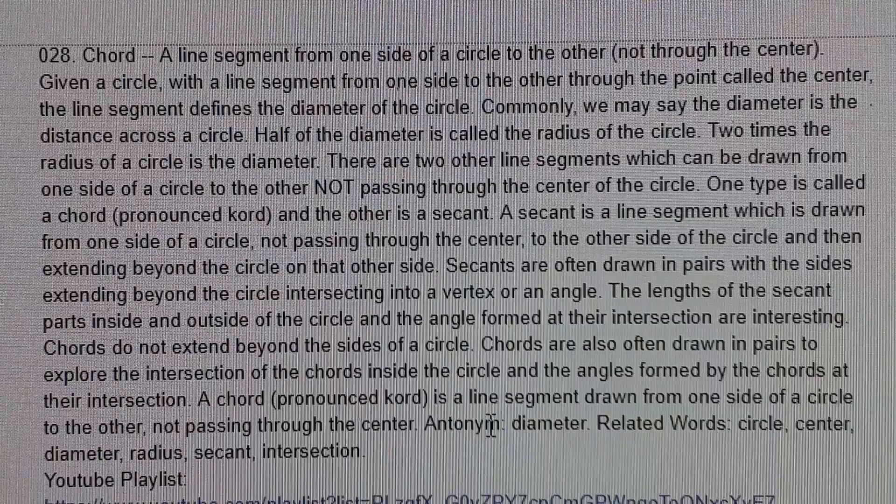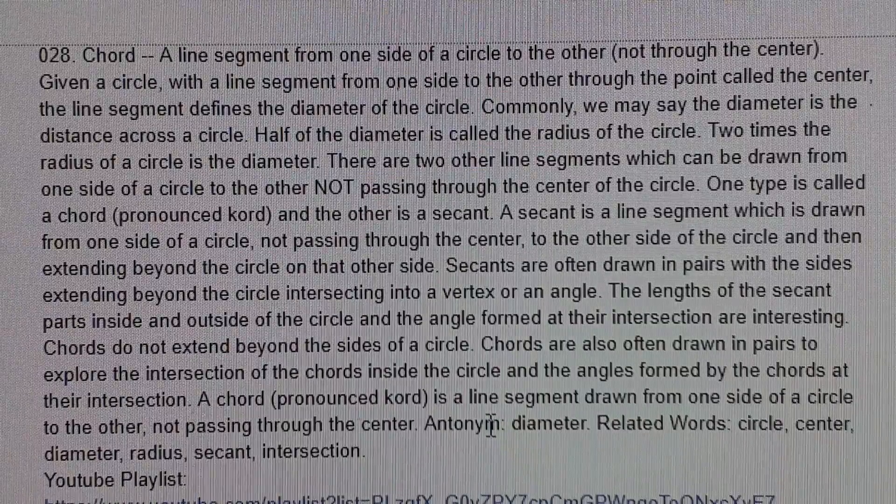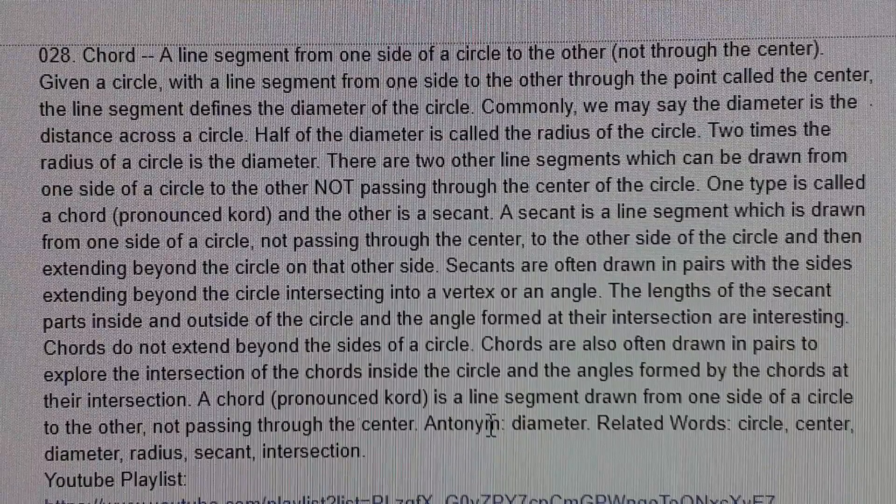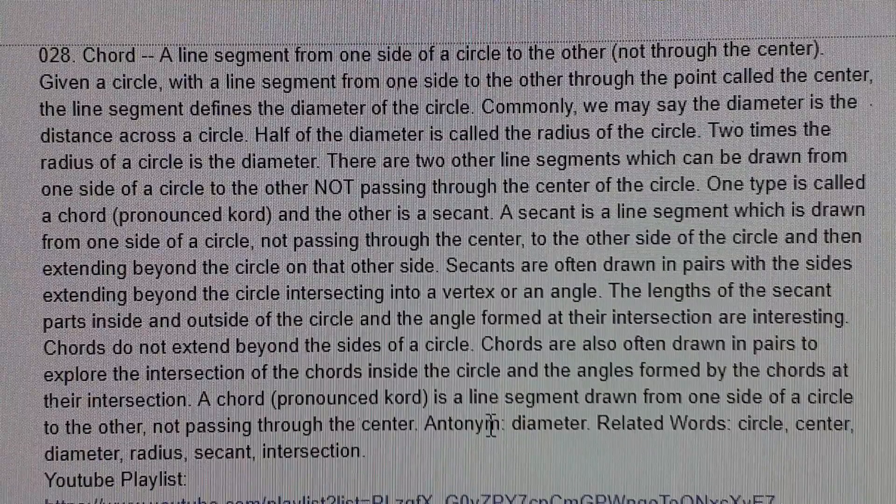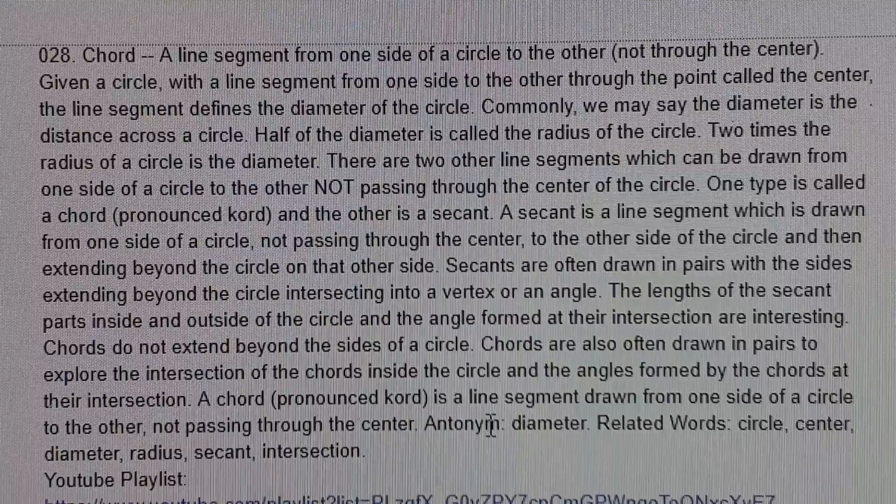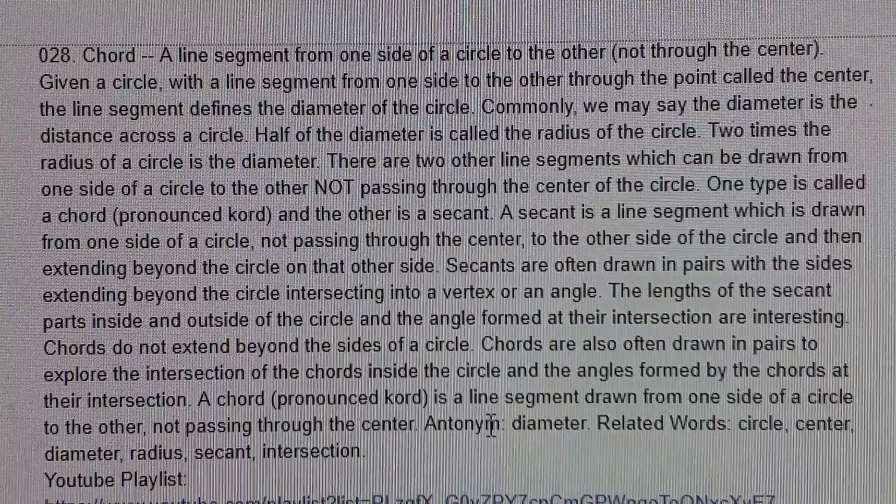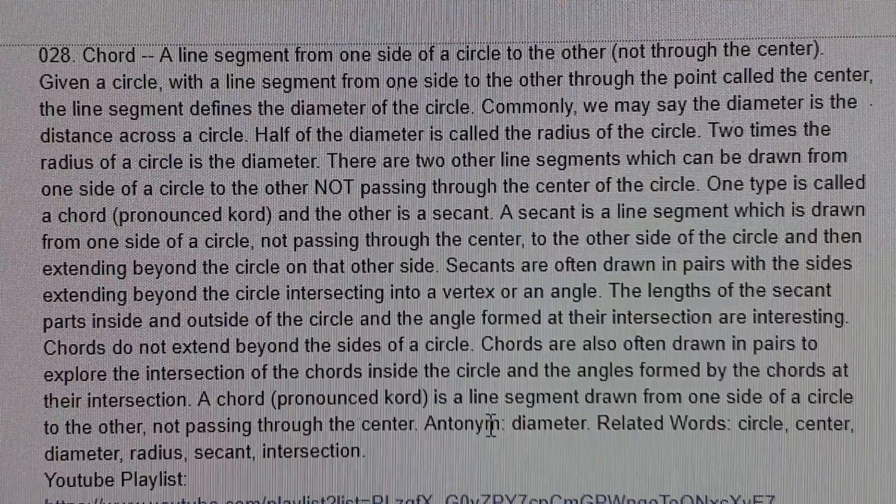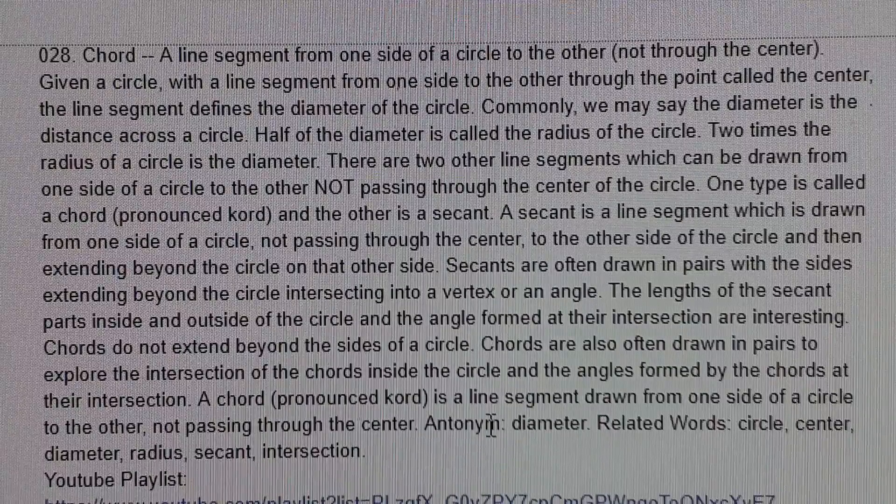There are two other line segments which can be drawn from one side of a circle to the other, not passing through the center of the circle. One type is called a chord, pronounced K-O-R-D. Students will sometimes want to say chord, but it's pronounced cord.